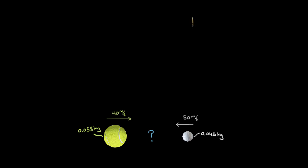Mathematically, the total initial momentum — using P for momentum and sigma to represent the total — means we add up all the initial momenta of all the objects. Momentum is a vector, so it can be negative; don't forget the signs. If momentum is conserved, the total initial momentum equals the total final momentum.